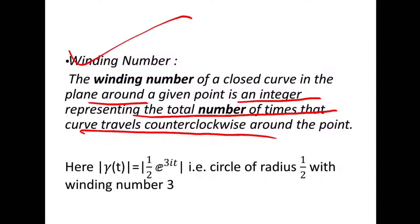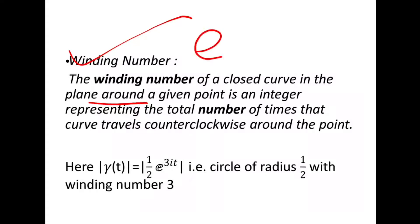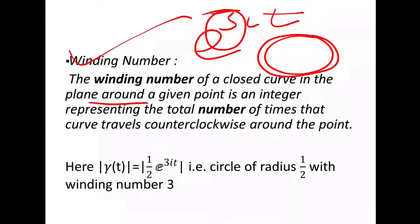This is the definition of winding number. Now the function is given as e^(3iθt). Here this 3 is the winding number of the curve, that is the curve counterclockwise three times around the point.